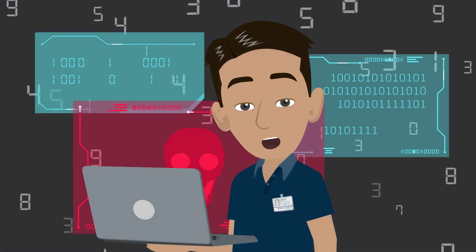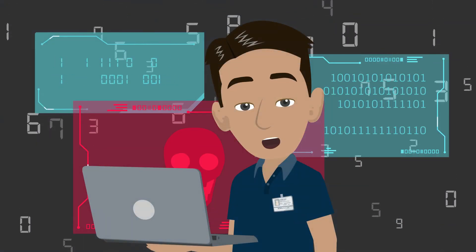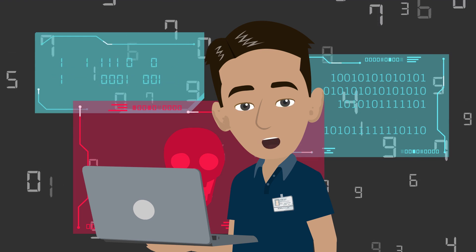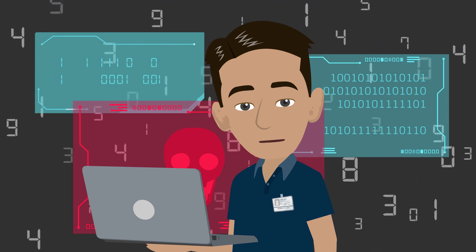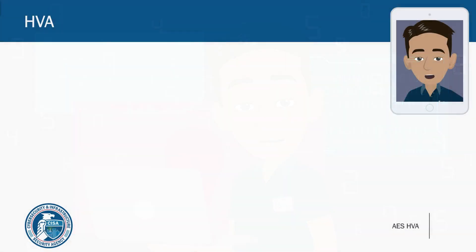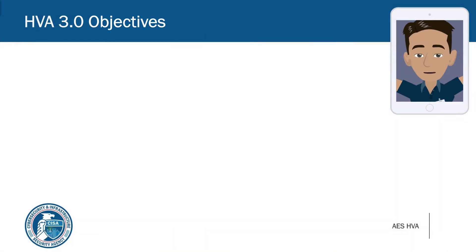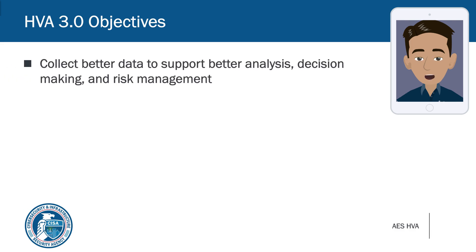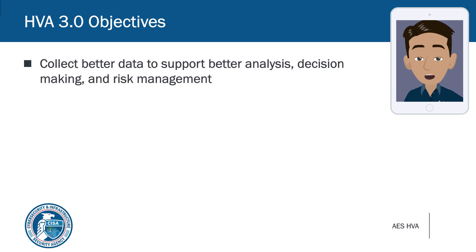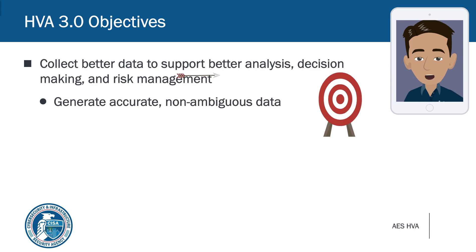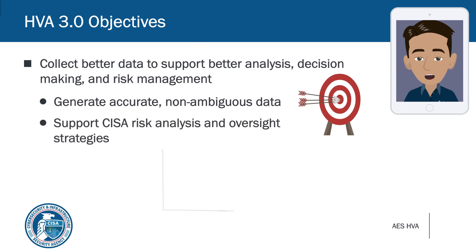HVA 3.0 was developed in response to CISA's changing needs and the ever-adapting cyber landscape. The development team created the new methodology with several objectives in mind. First, CISA wanted to collect better data in order to more effectively support analysis, decision-making, and risk management. The HVA assessment needed a better way to provide clear and accurate data to support the analysis needs of CISA in the future.